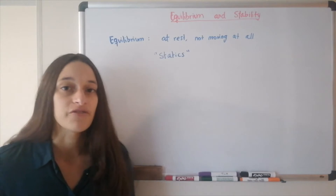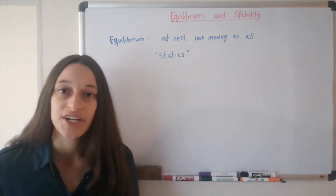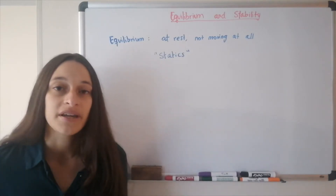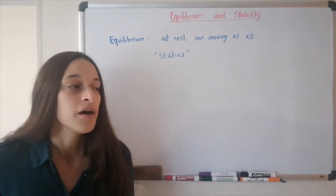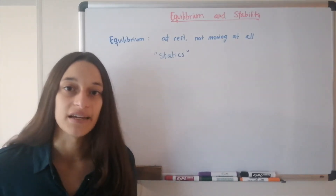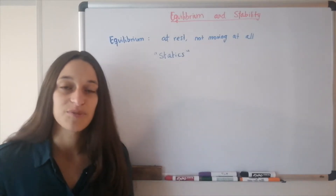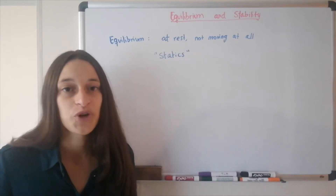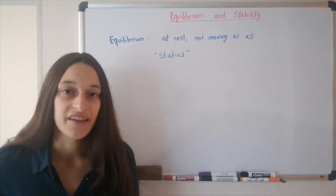Statics is actually very important for many types of fields. It's important for architecture because buildings and bridges, for example, should be static — they should not move at all. It's important for engineers because some machines have to be static as well. And it's important for doctors and athletes because some parts of the body have to be static, or you have to study the movement of the body and the joints.